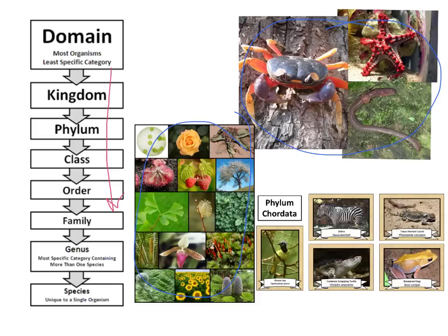When we go down to phylum, here is phylum Chordata. Phylum Chordata is basically the fact that organisms have a vertebrae — they have a notochord. These organisms are a little bit more narrowed down than just the animal kingdom in general.